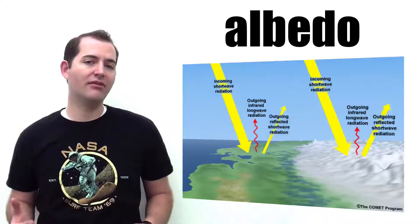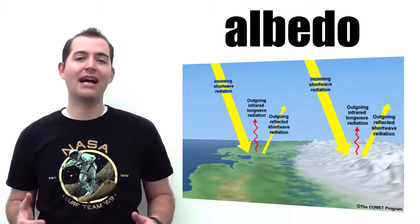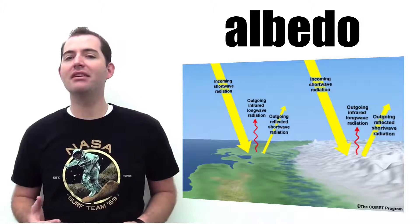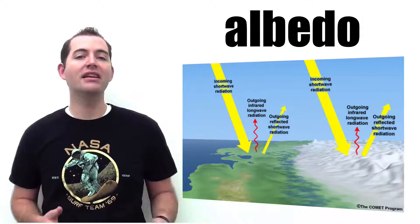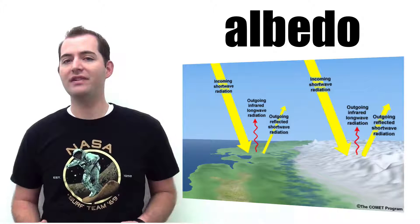Albedo is the fraction of solar radiation or short-wave radiation that is reflected from the surface of the earth back into space. Short-wave radiation is light that's typically defined as being from near-infrared through visible light to near UV light.